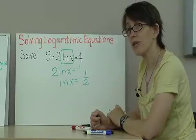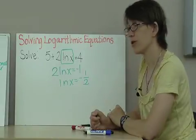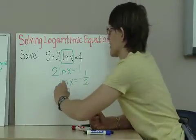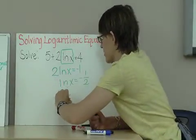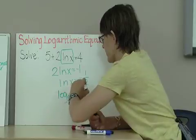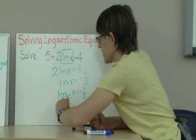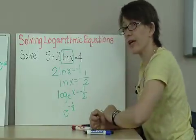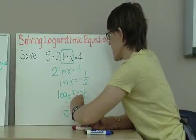Well, natural log of x is equal to log to the base e of x. If I rewrite this exponentially, I get e to the negative 1 half power equals x.